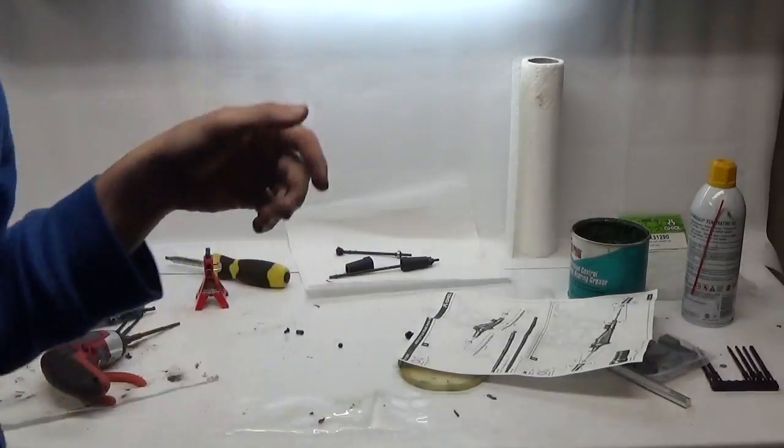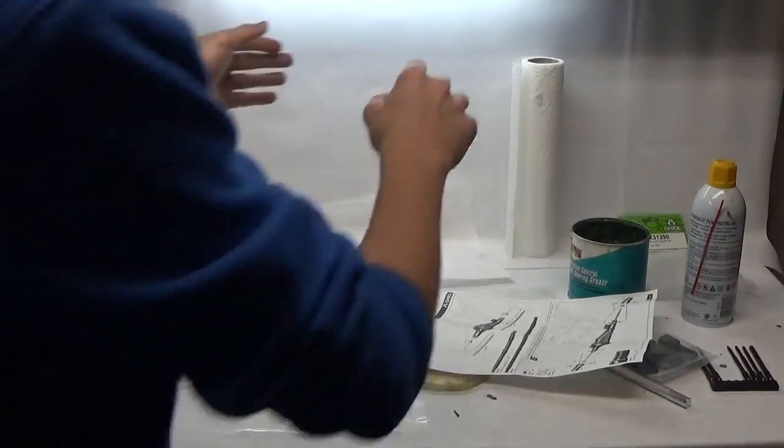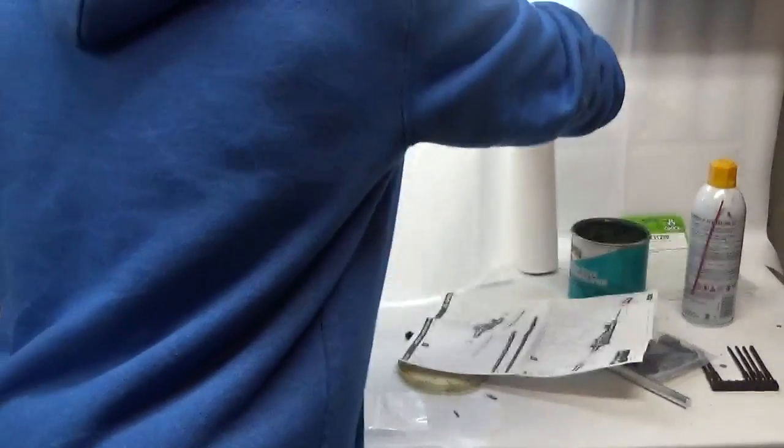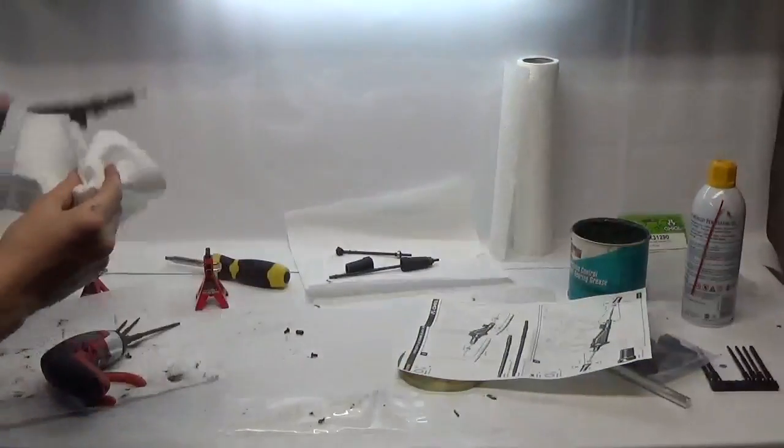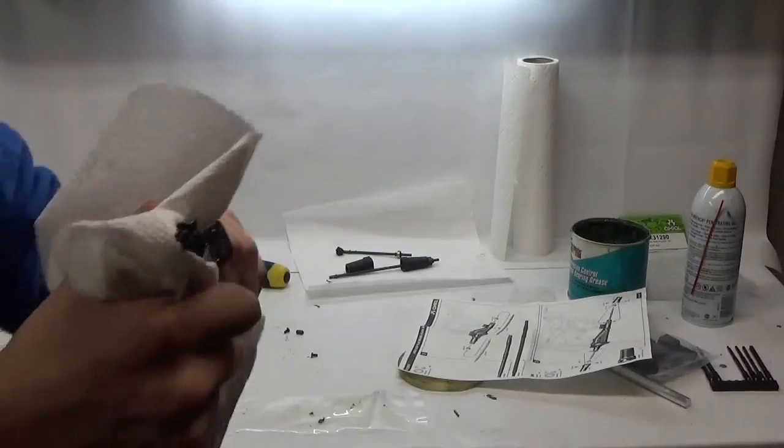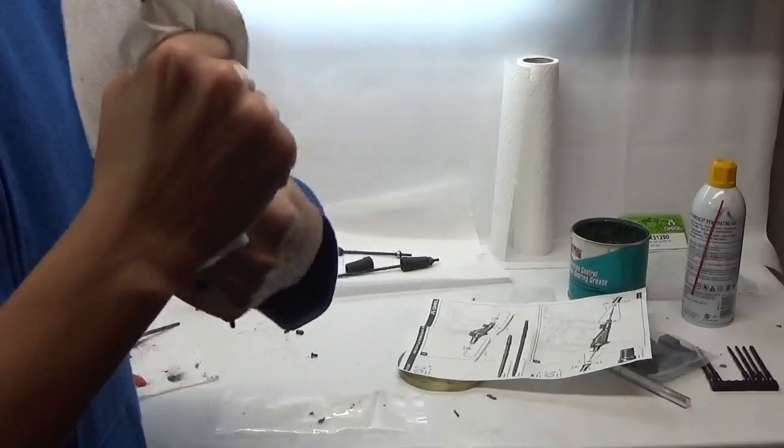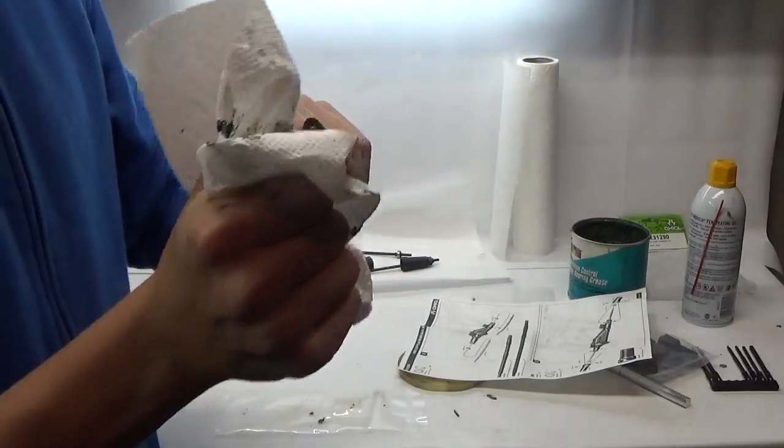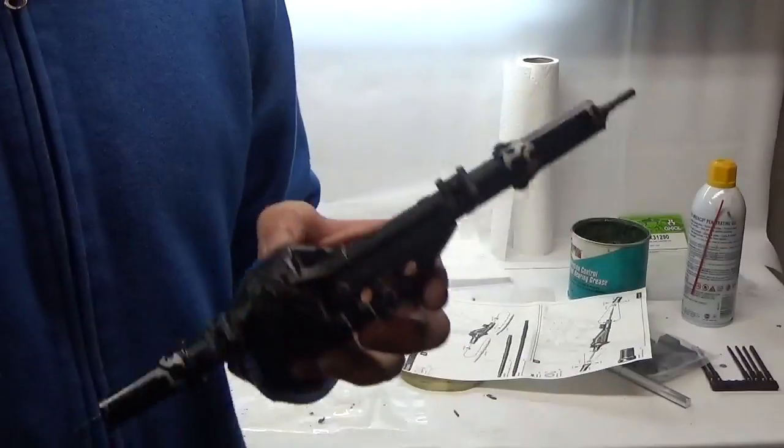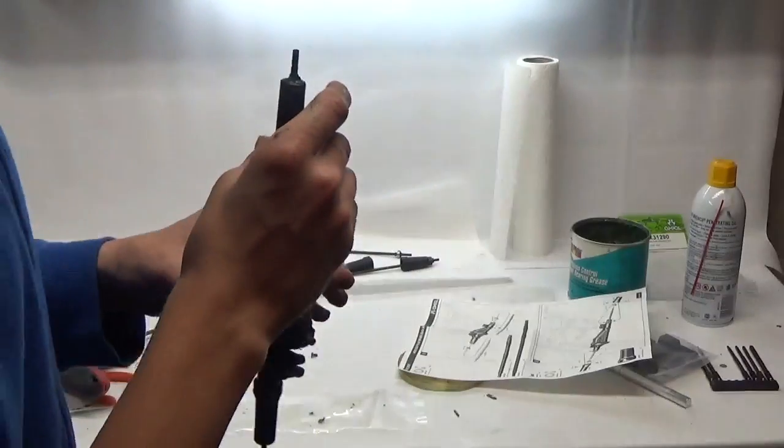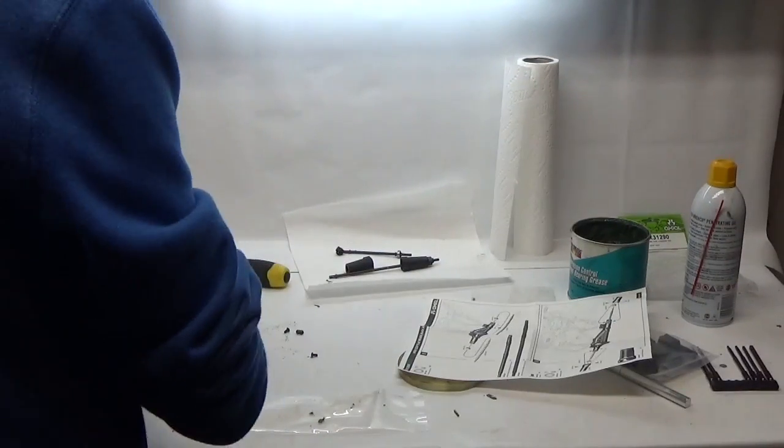Now I'm just going to go over the axle and clean off the outside because I am completely done with the greasy part of it pretty much. Now from here, the only thing left that I have to do is install the hexes onto here.